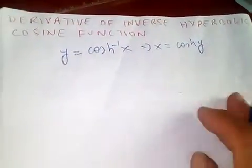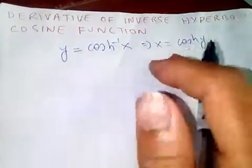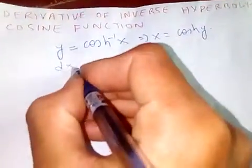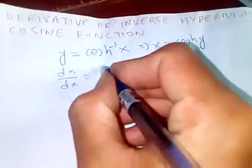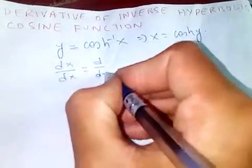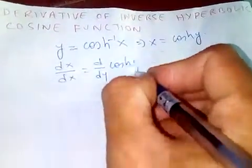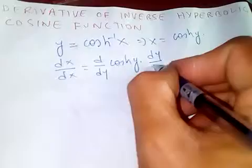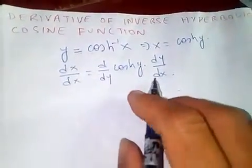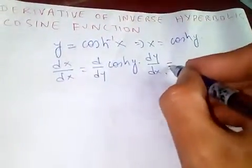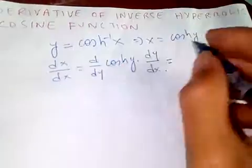Now let's take the derivative with respect to x. We have dx/dx equals d/dy of cosh(y) times dy/dx, using the chain rule. Since the derivative of cosh is sinh, we get 1 equals sinh(y) times dy/dx.